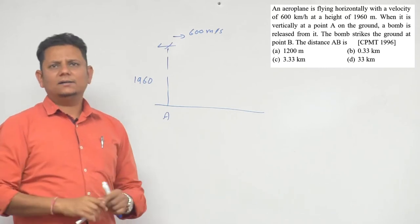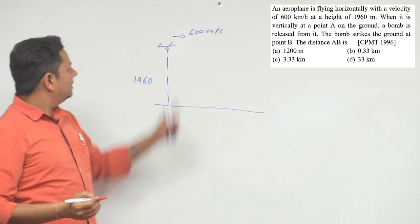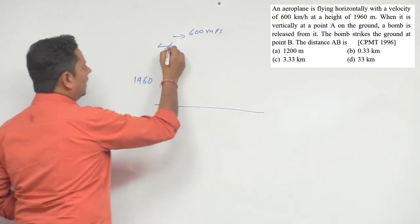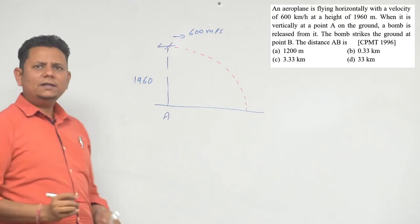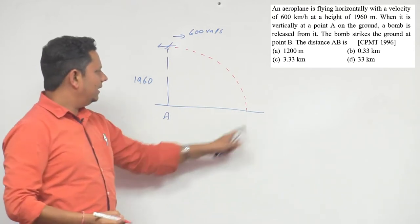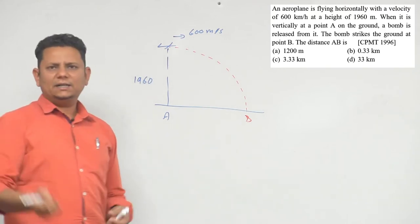As soon as we dropped the bomb, the bomb will go from here with exactly this velocity. So we can consider this to be the horizontal velocity of the bomb, or initial velocity. You need to find where the bomb will fall. What will be the distance between A and B? Basically you need to find the range.